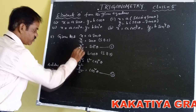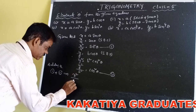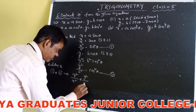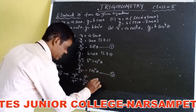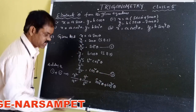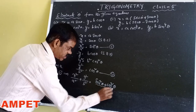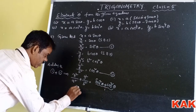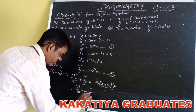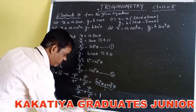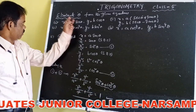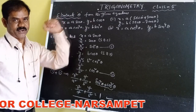The LHS is x²/a² + y²/b², and the RHS is sin²θ + cos²θ. What is the value of sin²θ + cos²θ? It equals 1. Therefore, x²/a² + y²/b² = 1. Here, theta is eliminated. That is the concept of eliminating theta.